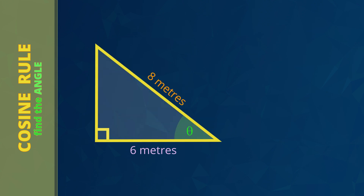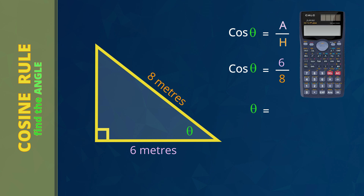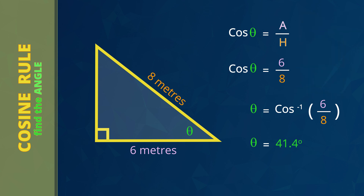Let's do another example to find the angle of the ski slope. In this example we already know the adjacent side is 6 meters and the hypotenuse is 8 meters. We're trying to find the angle theta. The rule is cos theta equals adjacent side divided by hypotenuse. The unknown angle we're trying to find is theta, the adjacent side is 6, and the hypotenuse is 8. Now remember we're working in reverse to find the angle. To tell the calculator we're working in reverse, we press shift before pressing the cos button. The calculator will say cos to the negative 1. We type: shift cos, open parenthesis, 6 divided by 8, close parenthesis. The answer is 41.4 degrees. This ski slope has an angle of 41.4 degrees.